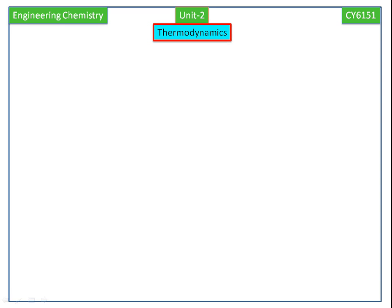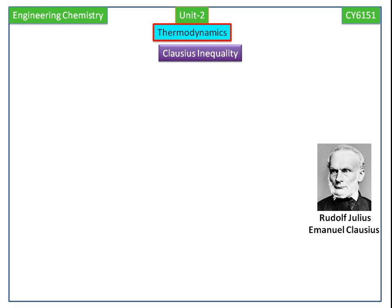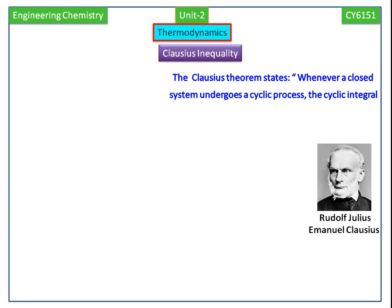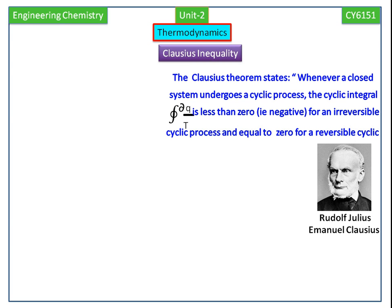In this video, we will discuss Clausius' inequality. Clausius' inequality is stated by German physicist Rudolf Clausius. He states that whenever a closed system undergoes a cyclic process, the cyclic integral of dQ by T is less than 0 for an irreversible cyclic process and equal to 0 for a reversible cyclic process. Mathematically, it can be expressed as cyclic integral of dQ by T less than or equal to 0.